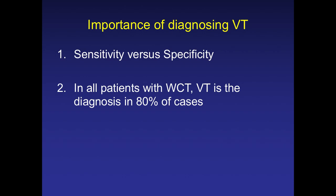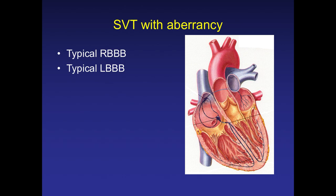Why are we talking about this topic? Because of sensitivity and specificity. Up to 80% of the time, if you come across a wide complex tachycardia, you should keep ventricular tachycardia in mind. Whenever in doubt, treat it as ventricular tachycardia. There are a lot of algorithms we can use to make the diagnosis more specific.